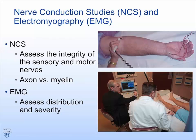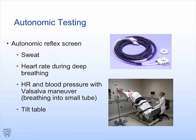Then we talk about autonomic testing. One thing we can do is an autonomic reflex screen with several parts. We can measure how well you sweat — little capsules placed on the skin capture your sweat and calculate whether that's normal for your age, gender, height, and weight. We can assess how well your heart rate varies when you take a deep breath — controlled by your vagus nerve, which can be affected in certain neuropathies. We can also have you perform a Valsalva maneuver while we look at your blood pressure and heart rate, and use a tilt table where you're tilted up from lying flat to check your heart rate and blood pressure.